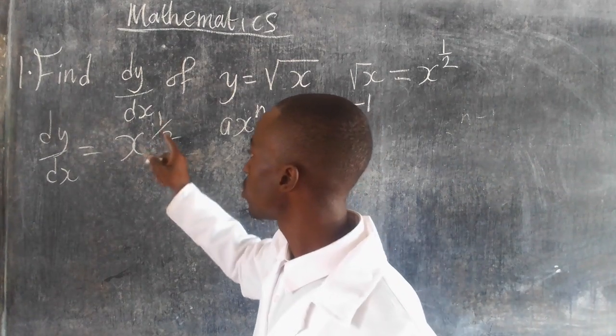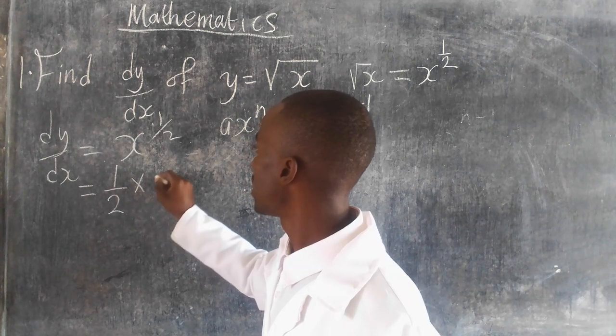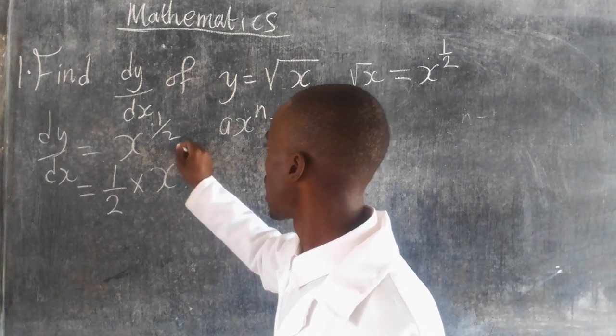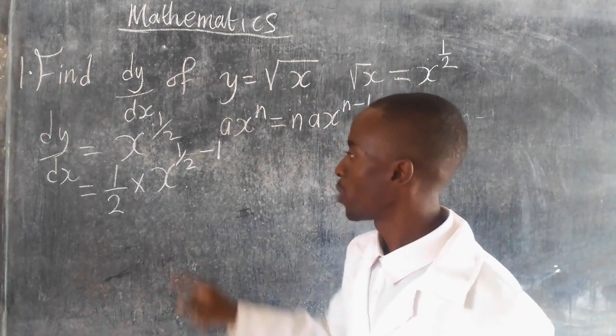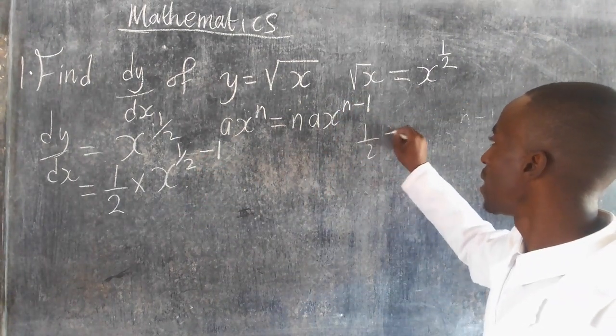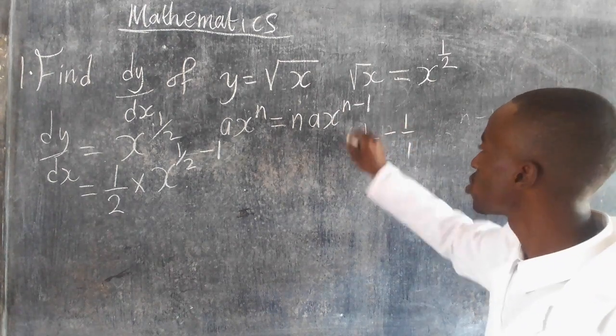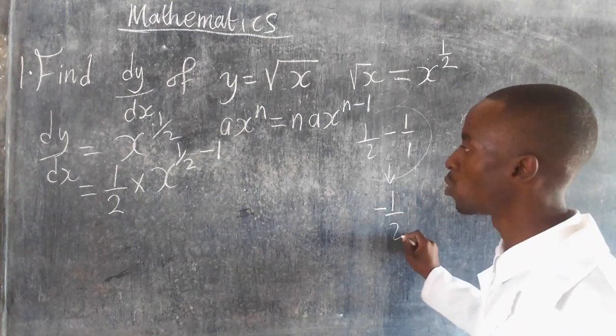This simply means this 1 over 2 will be 1 over 2 multiplied by x to the power 1 over 2 minus 1. So we have 1 over 2 minus 1 over 1. When we solve this, it is going to give me negative 1 over 2.